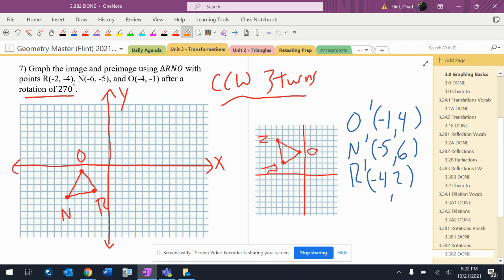So negative one, one, two, three, four, one, two, three, four, five, one, two, three, four, five, six. And then negative one, two, three, four, one, two. Alright, O prime, N prime, R prime, and then we're all set.